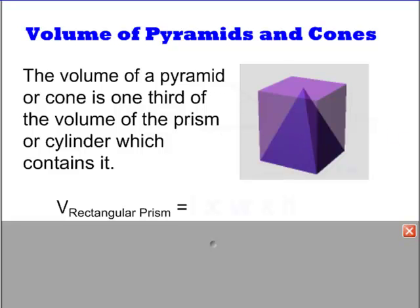Let's take a look at the volume of pyramids and cones. The volume of a pyramid or cone is one-third of the volume of the prism or cylinder which contains it.